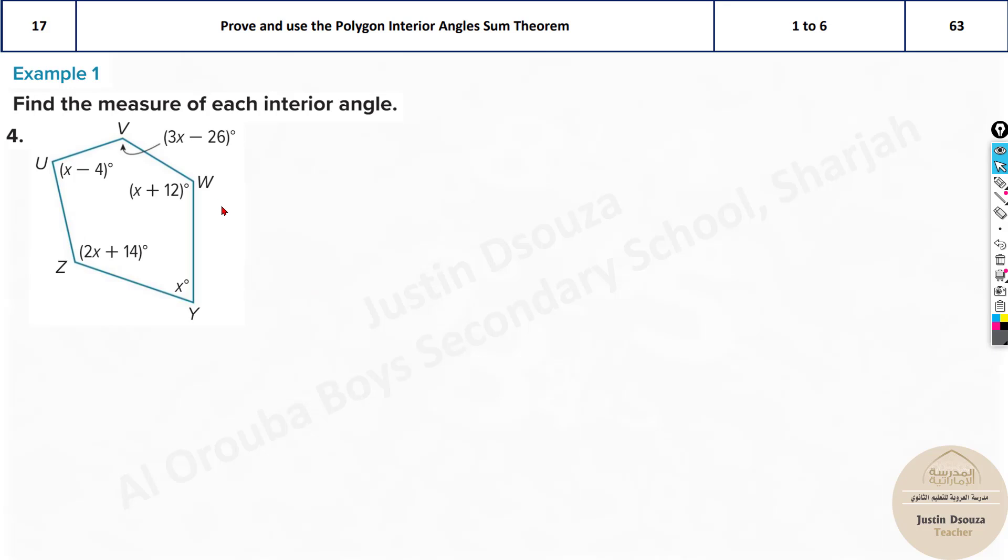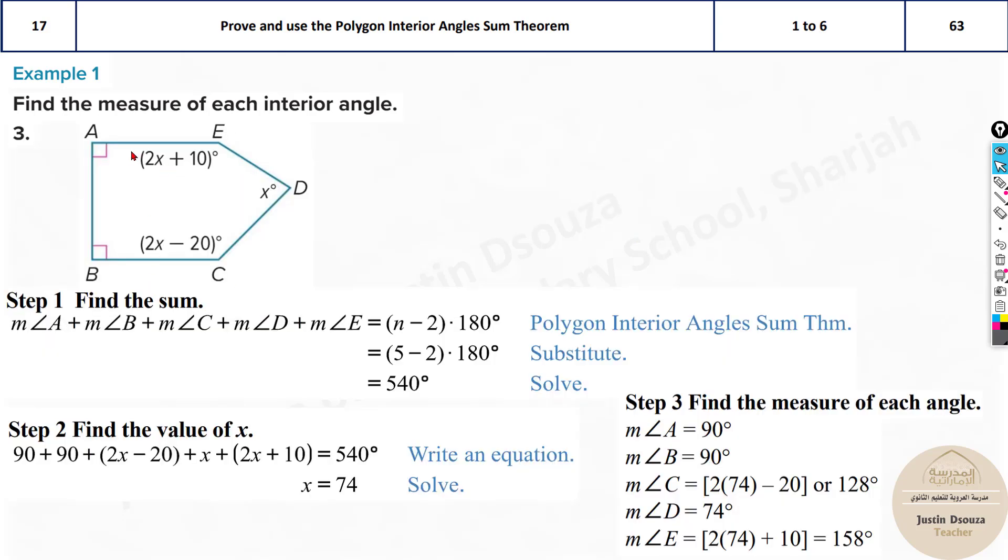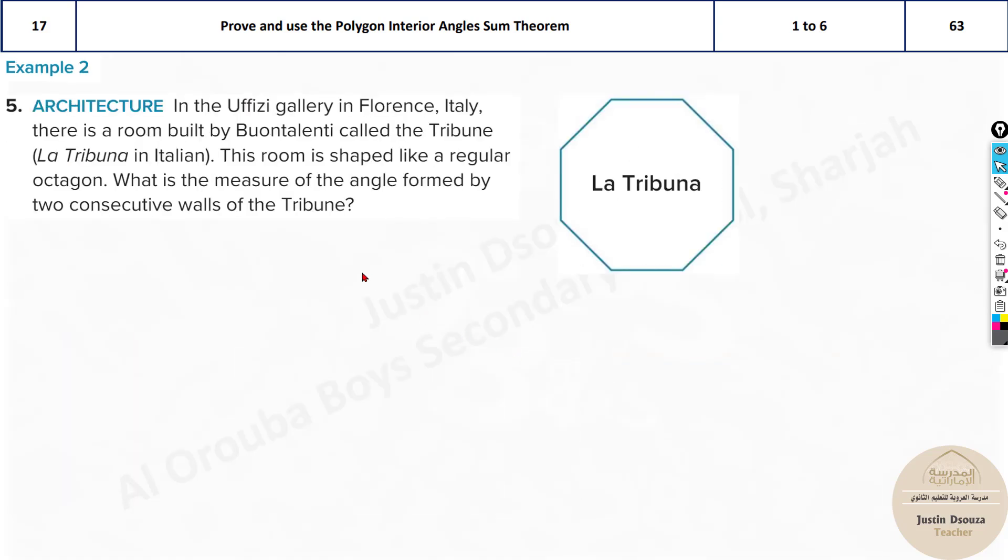Same thing here as well. Just the number of sides changes here. It's 1, 2, 3, 4, 5. It's 5 minus 2, that is 3 times 180, which is 540 degrees. In the previous problem also, it was 5 sides, so 5 minus 2 times 180.